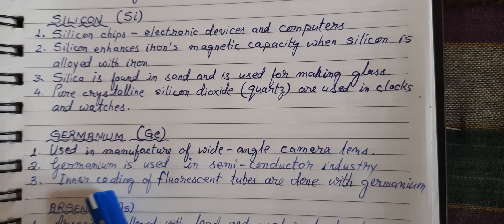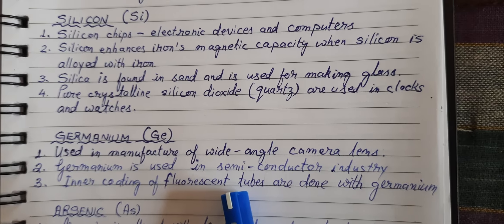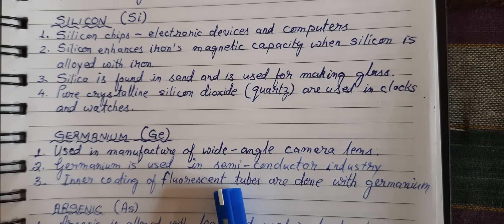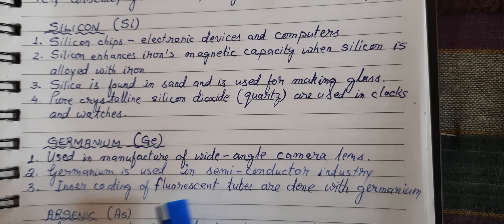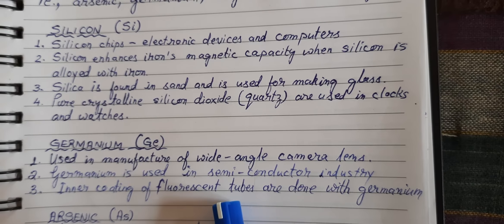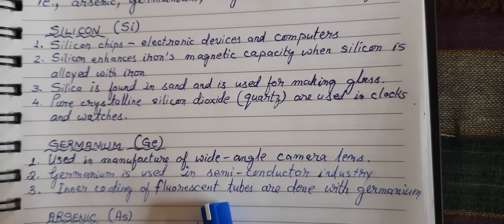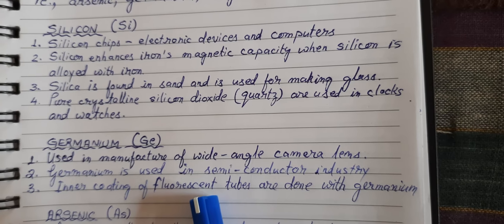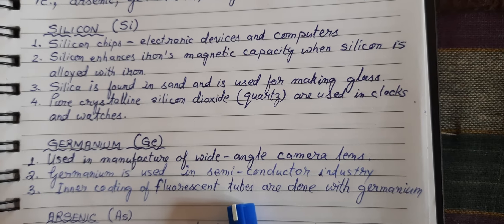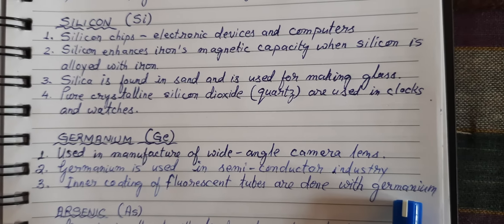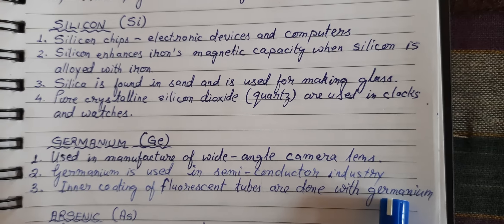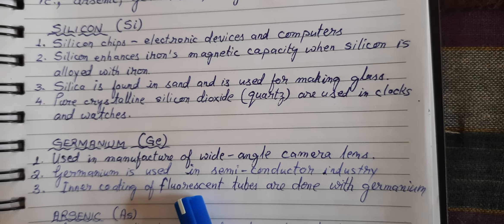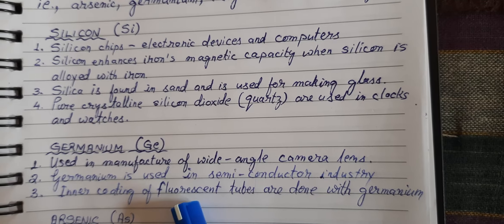Another use of germanium is in the inner coating of fluorescent tubes, which are also known as tube lights. The inner lining of these fluorescent tubes is coated with germanium-containing paint. Germanium-containing compounds are used in the paint applied to the inner lining of fluorescent tubes.